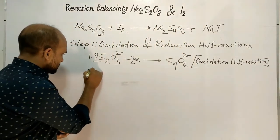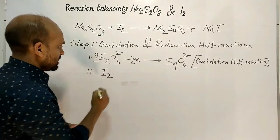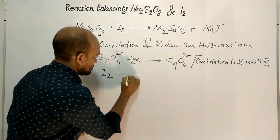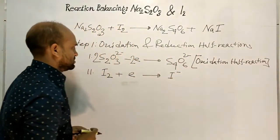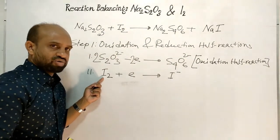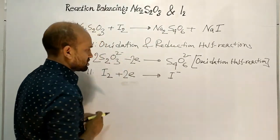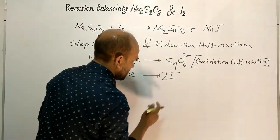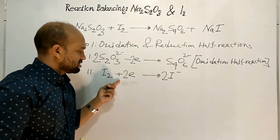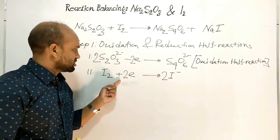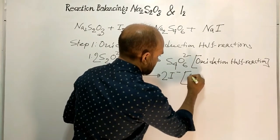Equation 2 is the reduction half reaction: iodine accepts electrons and converts to iodide ion. There are 2 iodine atoms in I₂, so 2 iodine atoms accept 2 electrons to form 2 iodide ions. This is the reduction half reaction.